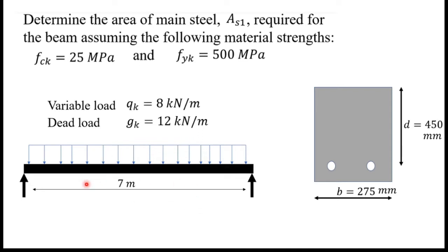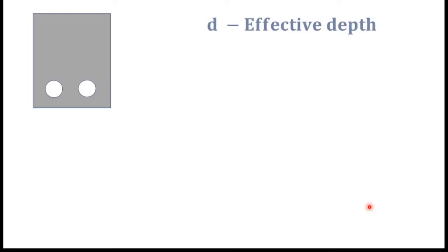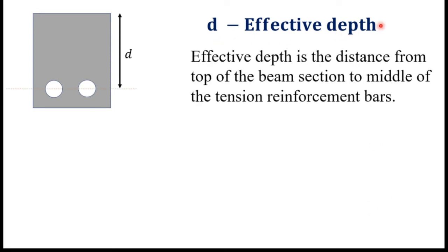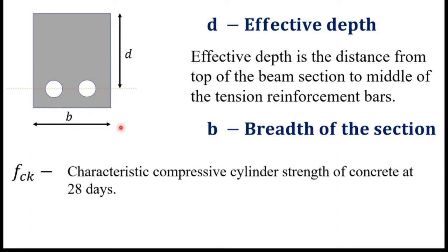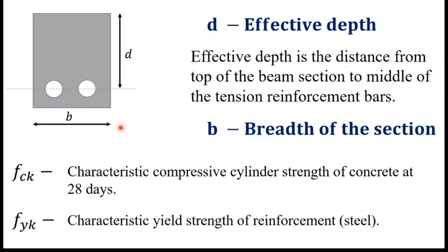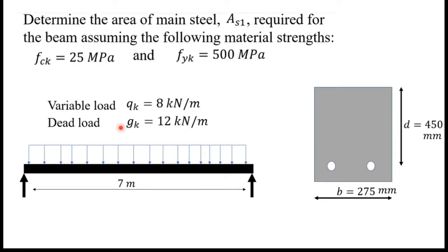The beam has a span of 7 meters. The cross-section shows D equals 450 millimeters and B equals 275 millimeters. D is the effective depth — the distance from the top of the beam section to the middle of the tension reinforcement bars. B is the breadth of the section. FCK is the characteristic compressive cylinder strength of concrete at 28 days, and FYK is the characteristic yield strength of the reinforcement steel.